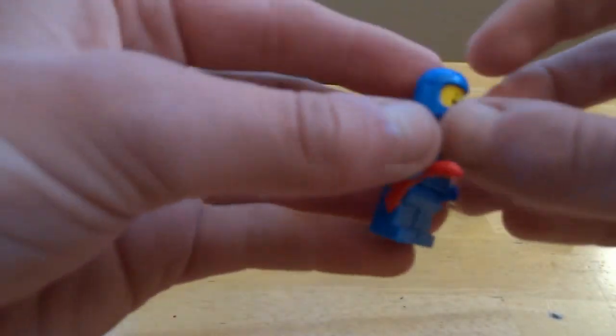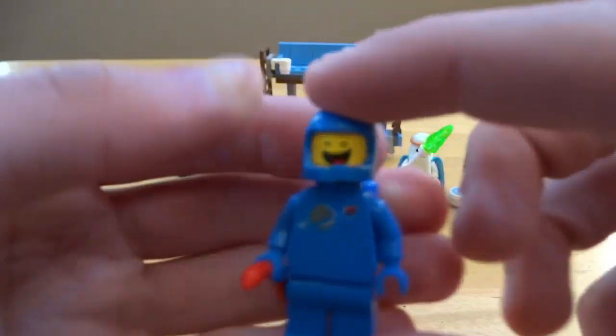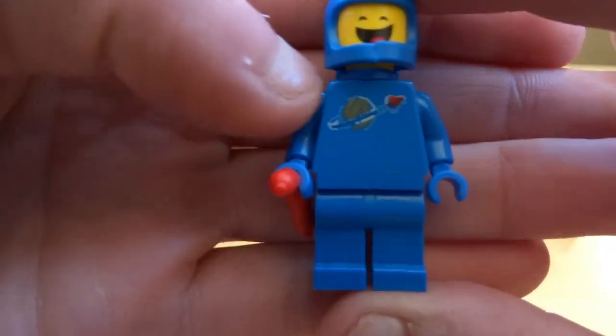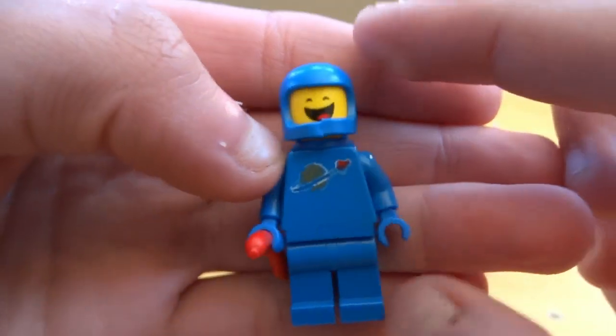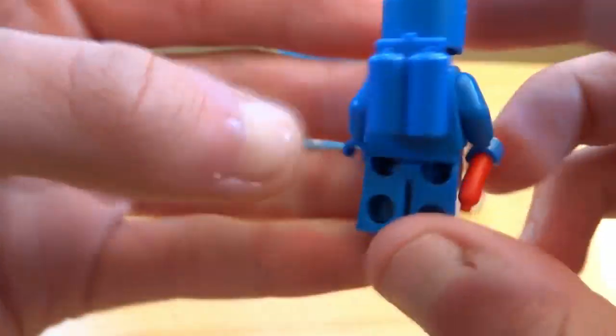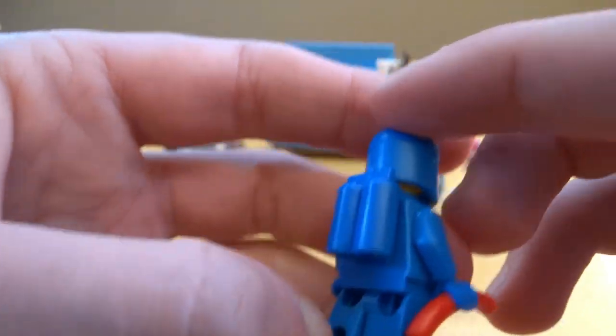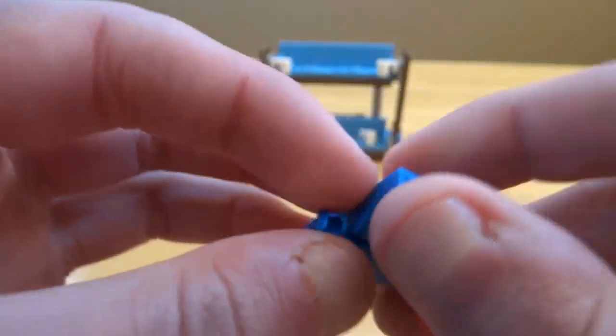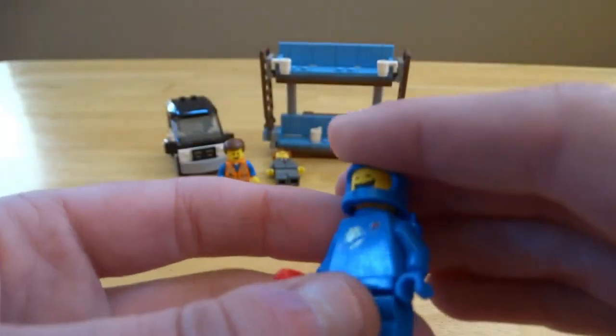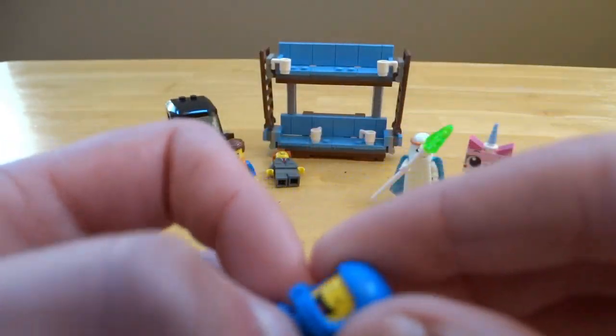Next up is Benny. He has a sausage, nothing too special there, and it is the regular old space logo. Standard blue legs and then he has his little jetpack on the back, which is the old print. I think it was really nice how Lego did that for him for the Lego Movie, really went back and got everything. Then it has the old helmet with the crack in it.